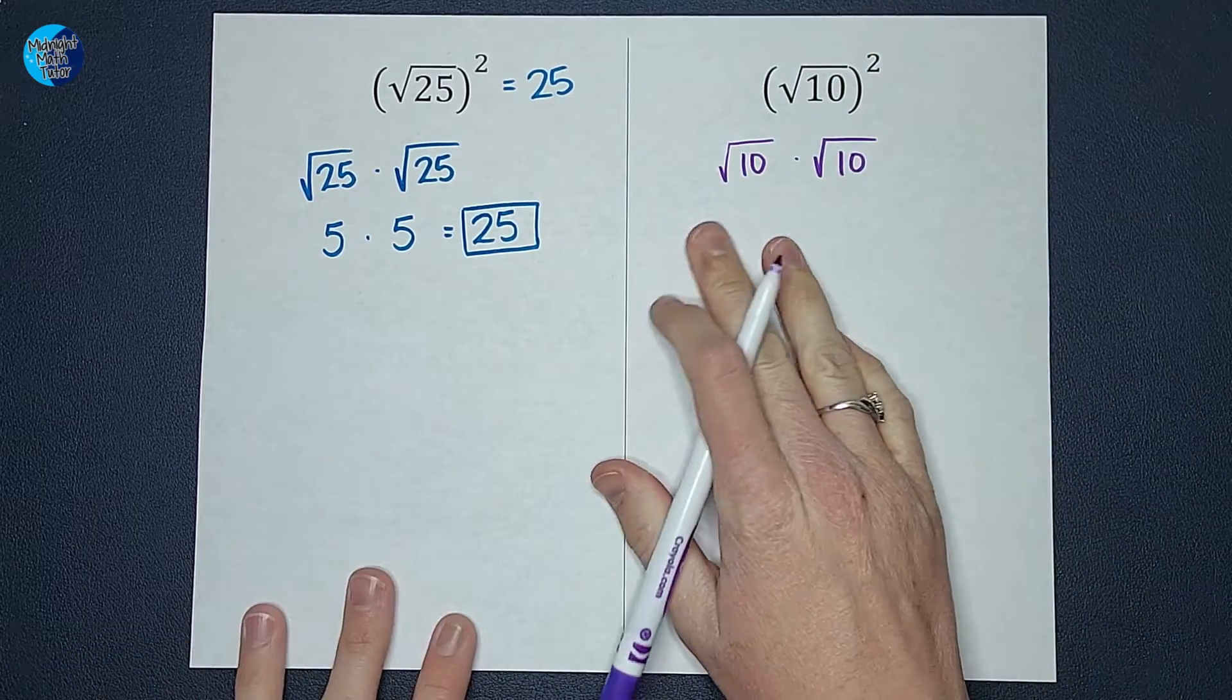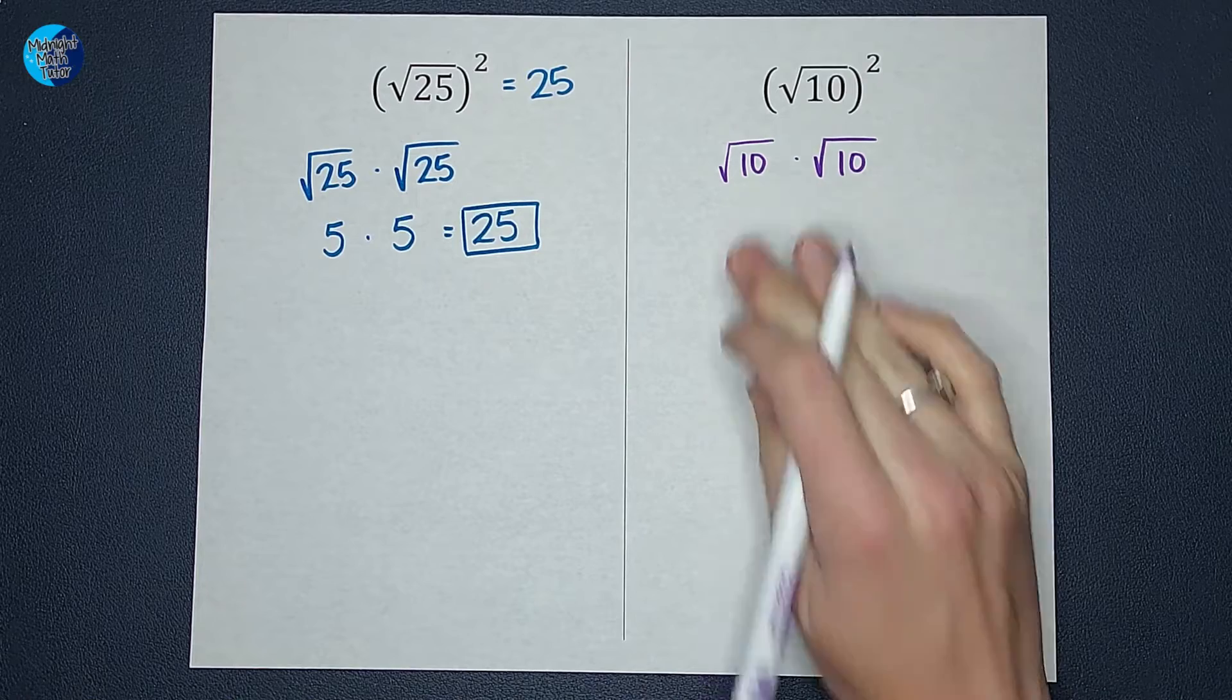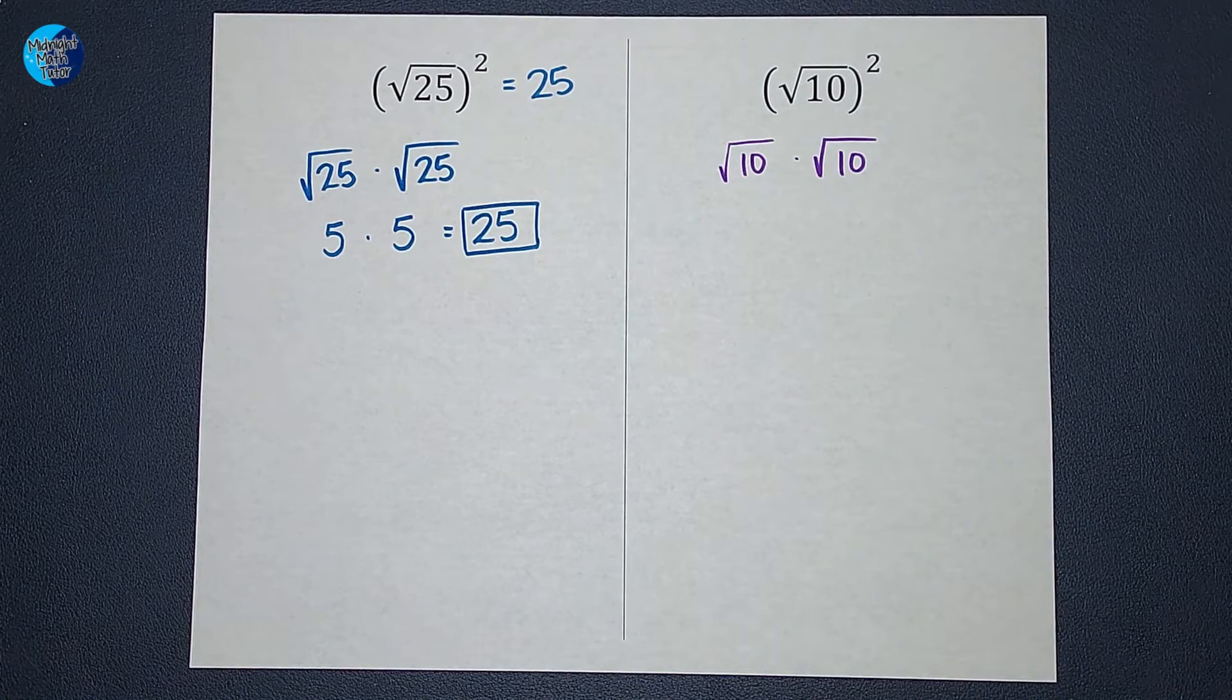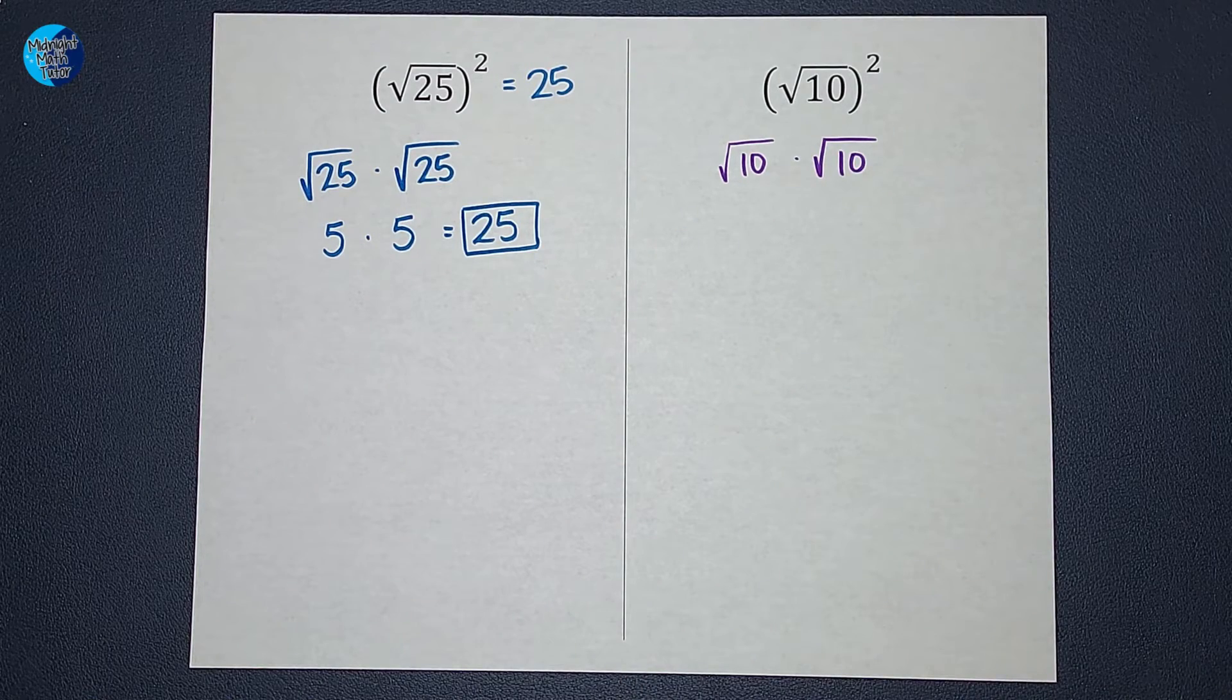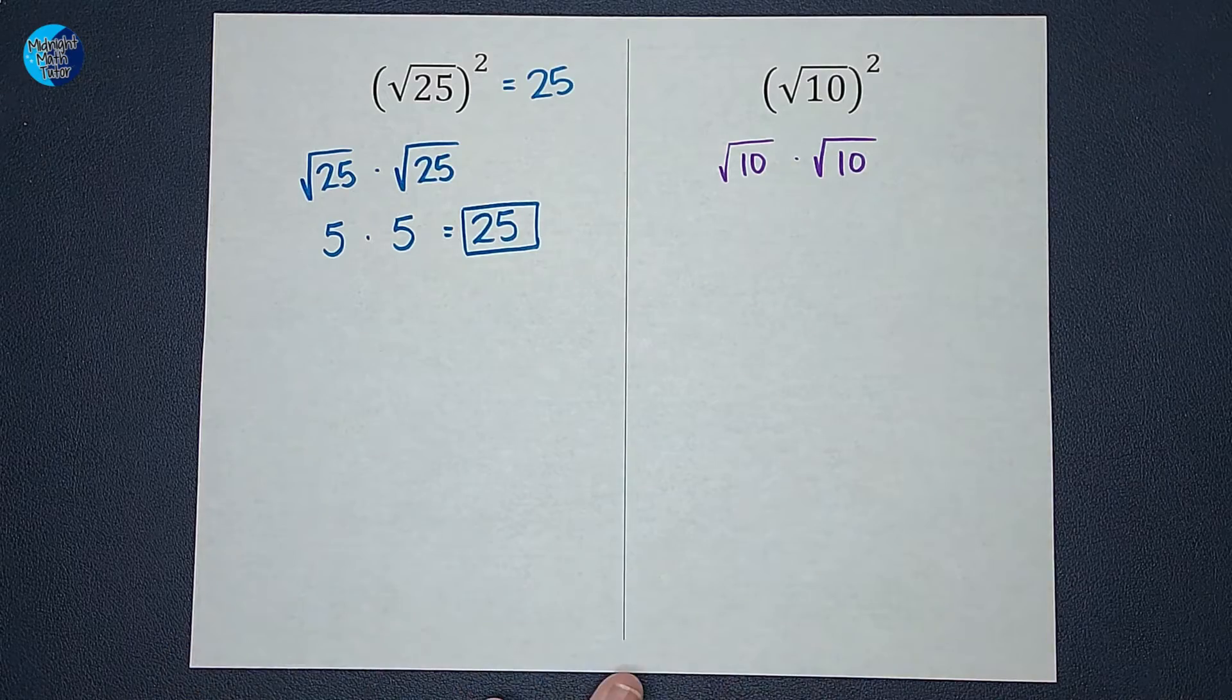Now when we multiply square roots, you go ahead and multiply those numbers together and keep them under the radical. If you want to see some more examples of this, I'll link a video in the corner.